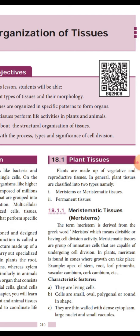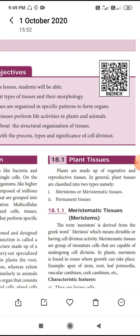Meristematic tissue continuously performs cell division. It is also called immature tissue, because it is seen in the early development process of organs and organ systems.